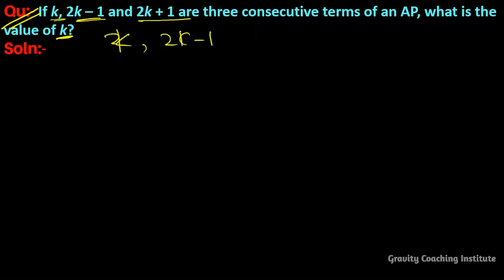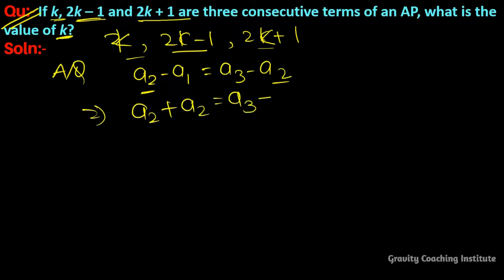k, 2k minus 1, and 2k plus 1 are in AP. So according to question, a2 minus a1 and a3 minus a2 are equal. Or, a2 plus a2 equals a3 plus a1, which means 2a2 equals a3 plus a1.